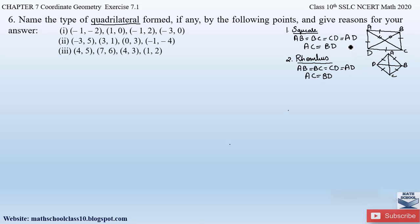This is the only difference between a square and a rhombus: in both, all four sides are equal, whereas in a square the diagonals are equal, but in a rhombus the diagonals are not equal.